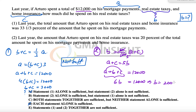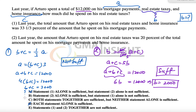That gives us the unique value of B, which is equal to $2,000. Since we have the unique value of the unknown variable we wanted, the second statement alone is sufficient, and the answer to the question is option B. Thank you so much.